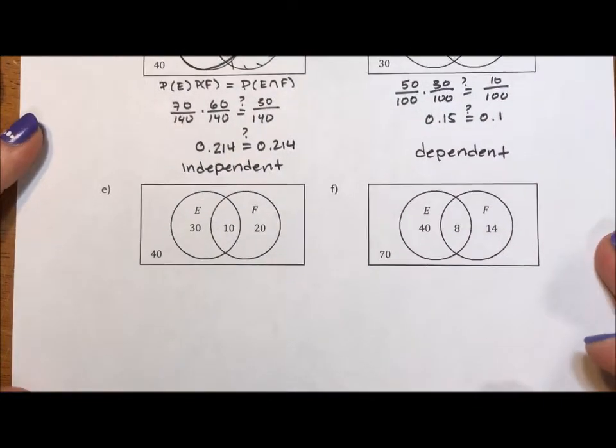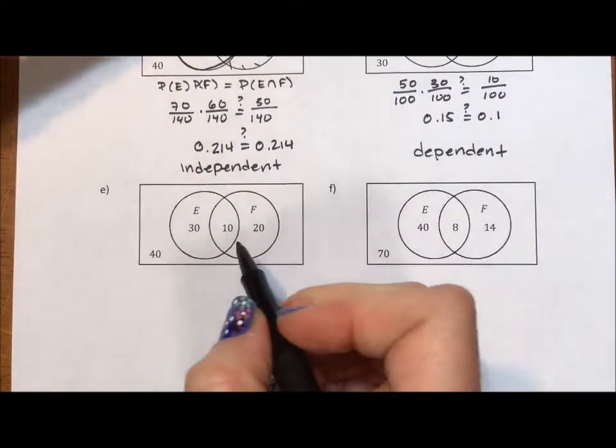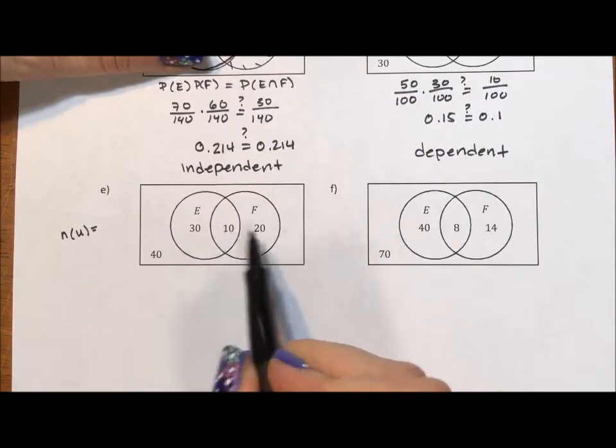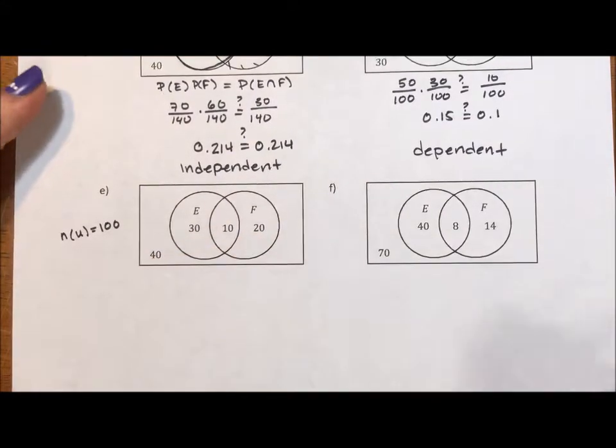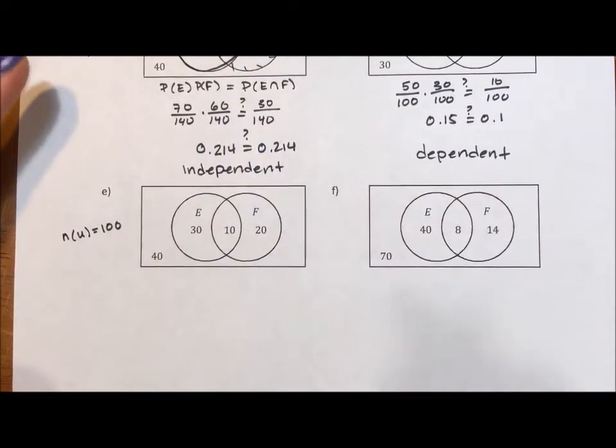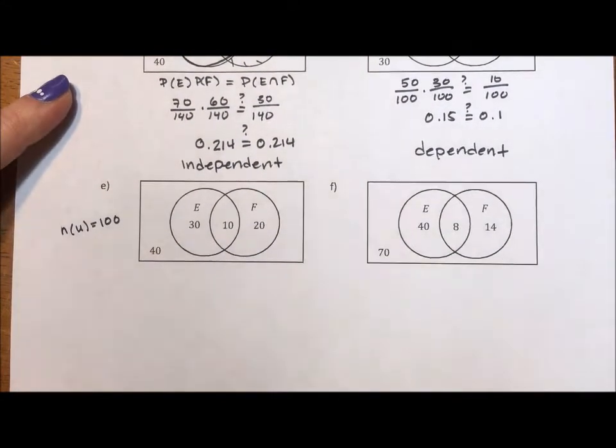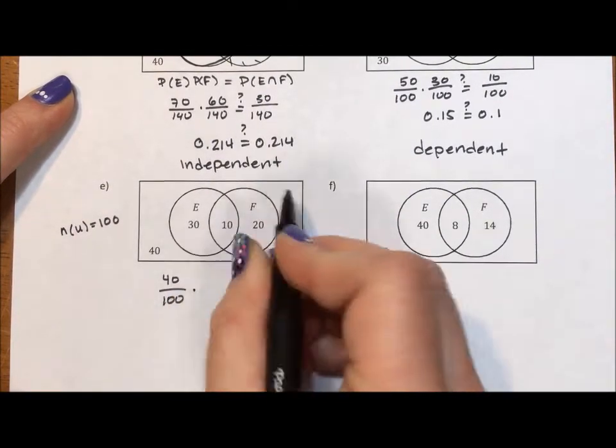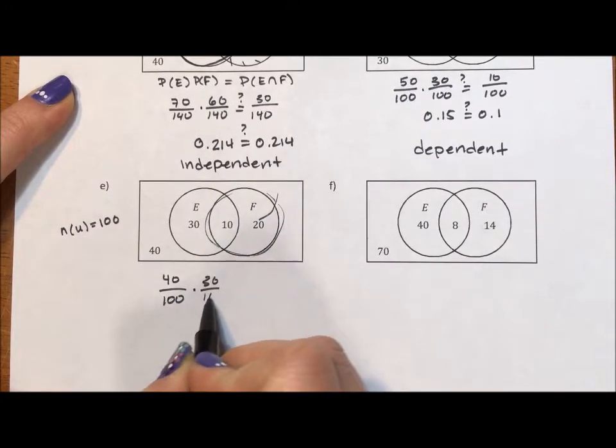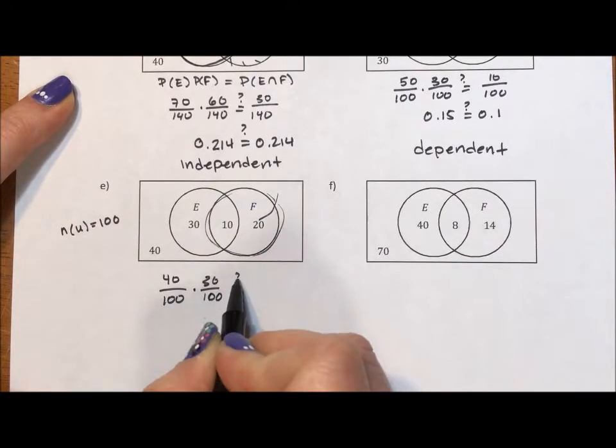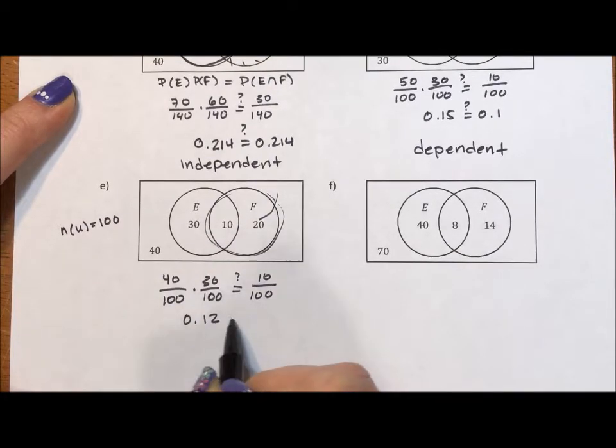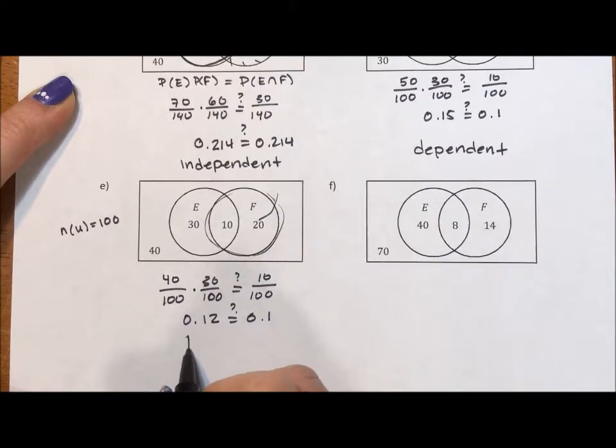Last two examples. The number in the universe here is 40, 70, 80, 100 again. Hundreds are nice. So we can take the probability of E, which is 40 over 100, times the probability of F, which is 30 over 100. And calculate, is that equal to 10 over 100? So we have 0.12. Does this equal 0.1? No. So these are dependent.